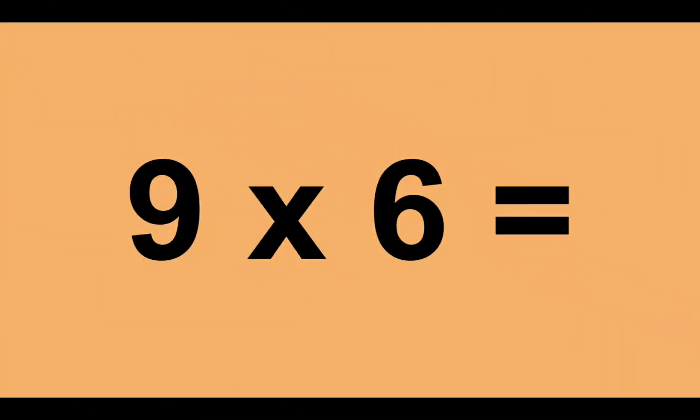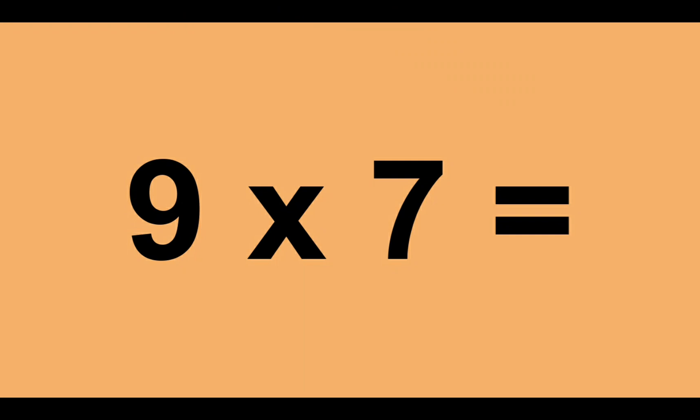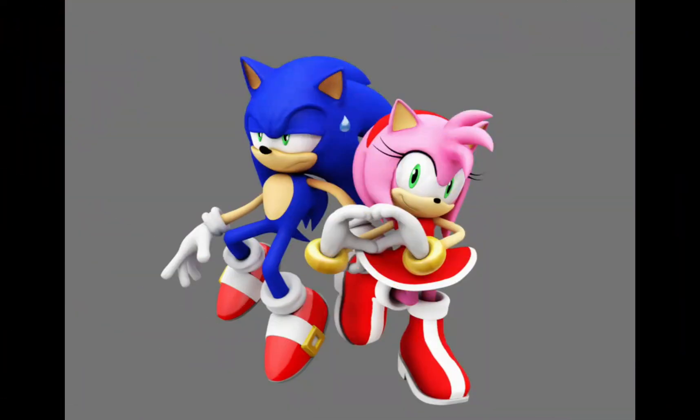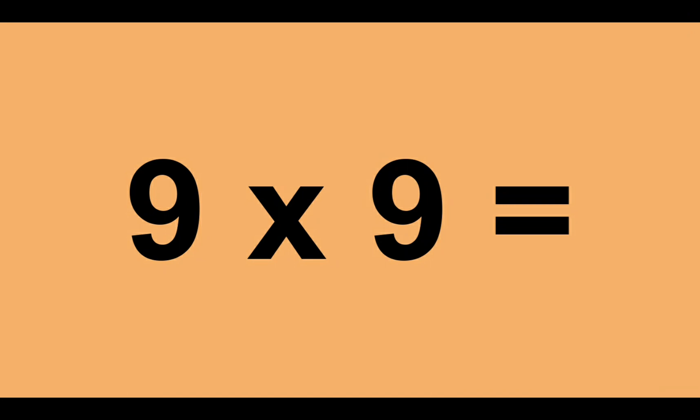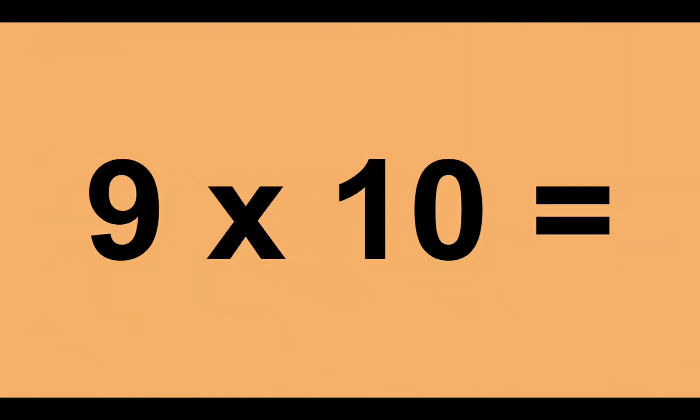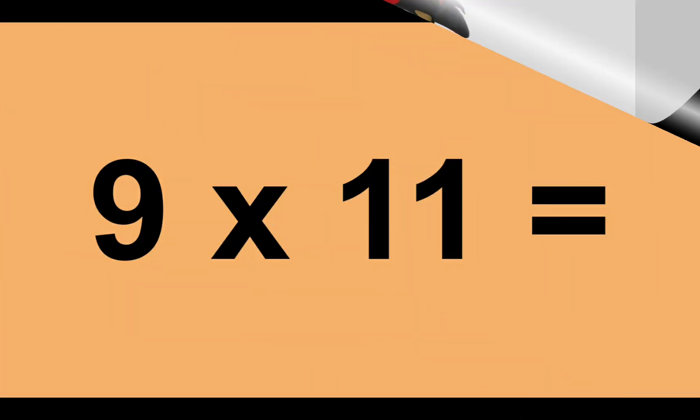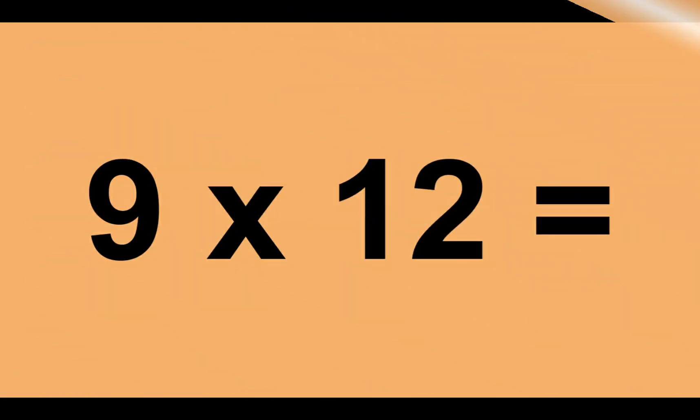Nine times six equals fifty-four. Nine times seven equals sixty-three. Nine times eight equals seventy-two. Nine times nine equals eighty-one. Nine times ten equals ninety. Nine times eleven equals ninety-nine. Nine times twelve equals one hundred and eight.